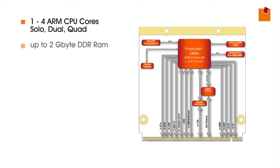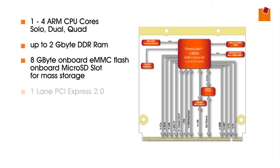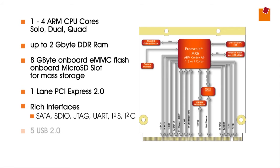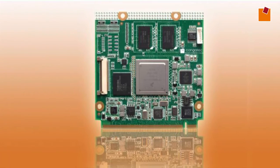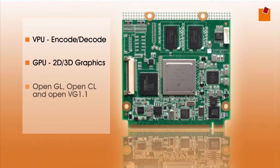The Conga-QMX6 features up to 2GB DDR3 memory, 8GB onboard flash, or an onboard microSD slot for mass storage. It also includes PCI Express by one lane and a rich interface set like Serial ATA, five USB ports, and Gigabit Ethernet. The integrated graphics are equipped with a VPU for video encode and decode, GPUs for 2D and 3D graphics, as well as OpenGL, OpenCL, and OpenVG support.